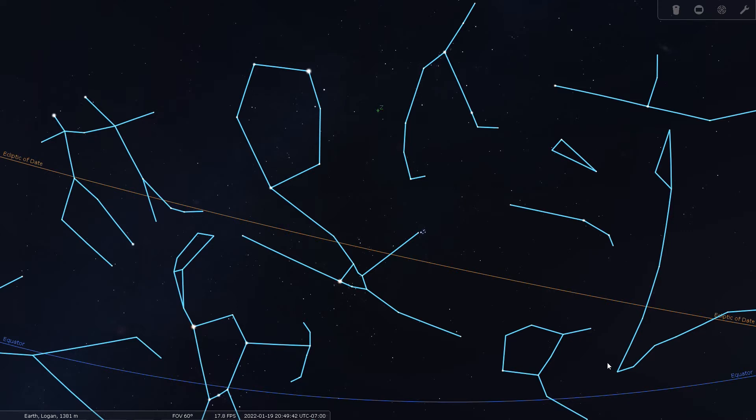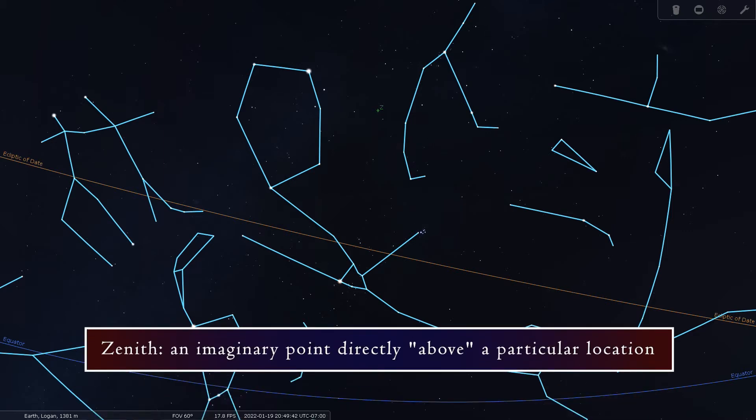In other words, if you were to look up at about 9pm on January 22nd, for example, Auriga would probably be pretty close to directly overhead. That is what zenith means, right overhead.